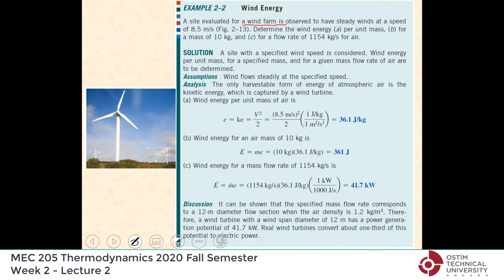Steady winds at a speed of 8.5 meters per second — which is a good velocity for wind turbines. The question is: what is the wind energy (which is mechanical energy, specifically kinetic energy) per unit mass, for a mass of 10 kilograms of air, and for a given mass flow rate?